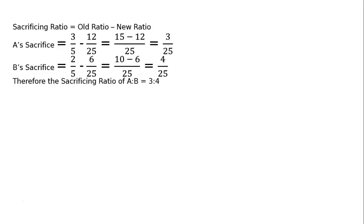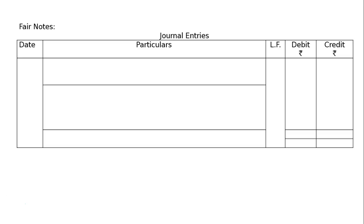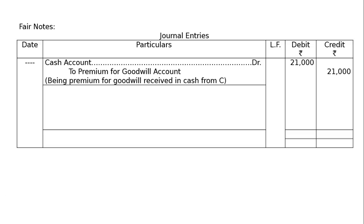Therefore, the sacrificing ratio of A to B is equal to 3 to 2. Journal entries: C brings in cash — Cash account debited to Premium for Goodwill account. In the debit, Rs. 21,000; in the credit, Rs. 21,000.